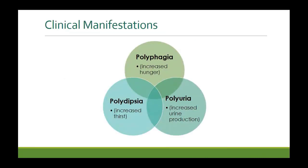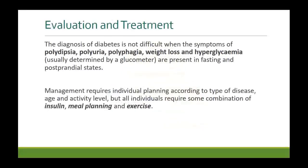The classic triad of diabetes is polyphagia, polydipsia, and polyuria — these patients are always hungry, always thirsty, and urinating frequently. However, this is the classic presentation and not every patient will present this way. Diagnosis is not difficult when these symptoms are present.